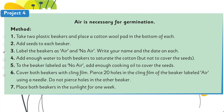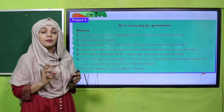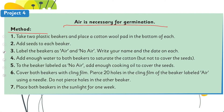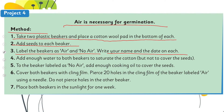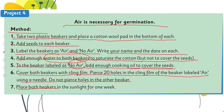Project Number Four: air is necessary for germination. In this project, we will remove one condition at a time. Take two plastic beakers, place cotton wool at the bottom, and add pea seeds. Label them 'air' and 'no air.' Add water to both beakers — enough to saturate the cotton but not cover the seeds. For the beaker labeled 'no air,' also add cooking oil to cover the seeds. Cover both beakers with cling film. Pierce 20 holes only in the 'air' beaker; do not pierce the 'no air' beaker. Place both in sunlight for one week.